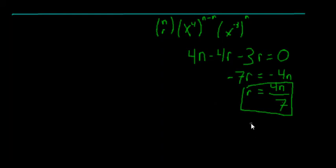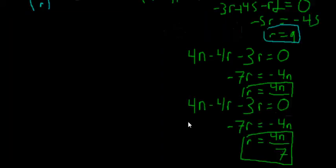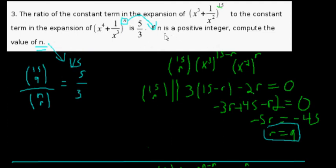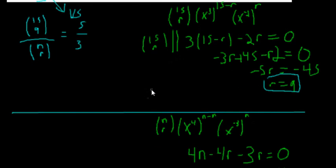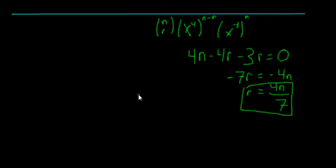Now we have a relationship between n and r. Going back to the original problem, it says n is a positive integer — which makes sense because the binomial theorem only works with integer values of n and r. Since r must also be an integer and we're dividing by seven, the only way r can be an integer is if n is divisible by seven, so it cancels out with that seven.